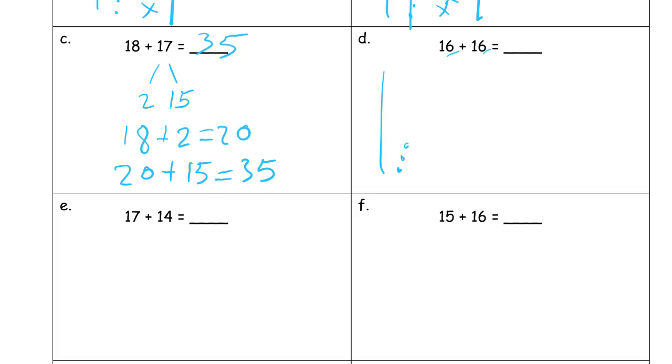16 plus 16, you see double sixes there. 1, 2, 3, 4, 5, 6, and six more ones, 1, 2, 3, 4, 5, 6, and another 10, right, for the rest of that 16. There's a 10, so 30 plus the two ones, 32.